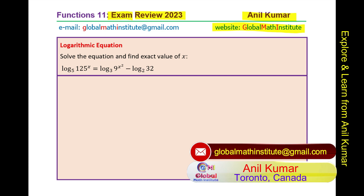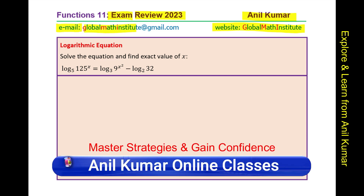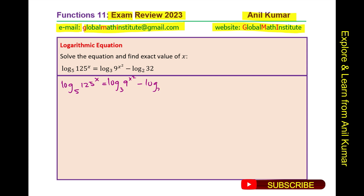You can always pause and answer the question. Now let us begin with the solution. We are given that log to the base 5 of 125 to the power of x equals log to the base 3 of 9 to the power of x squared, minus log to the base 2 of 32.